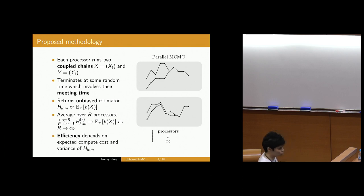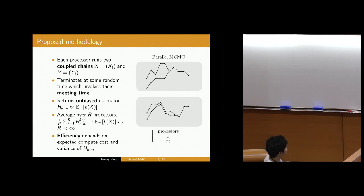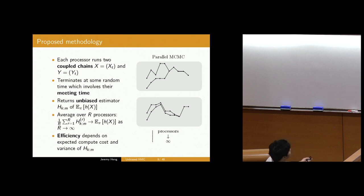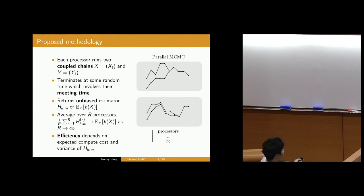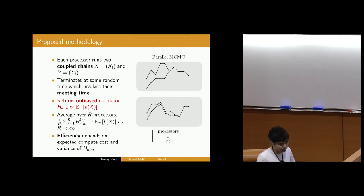The efficiency of our methodology very much depends on two things: the expected compute cost — which has to do with the meeting time and how well you can couple chains in high dimensions — and the variance of our estimator. I'm going to start by describing how you come up with unbiased estimators.